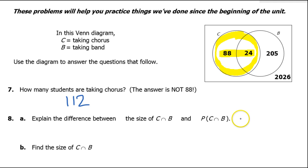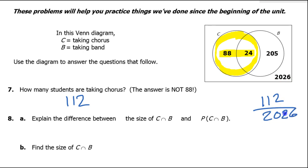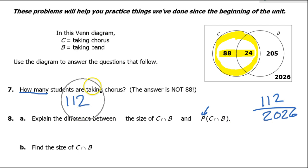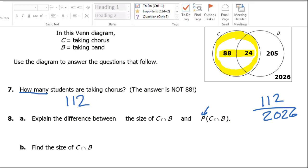Sometimes we calculate probability as target over total — for example, 112 divided by the total of 2,026. But sometimes we just write a single number. When do we use a fraction versus just a number? The target over total approach is only for probability, when you see the P notation. For problem number seven, it just said 'how many' — that is not a probability. We write 112, that's it. We don't divide by anything. Common mistake.